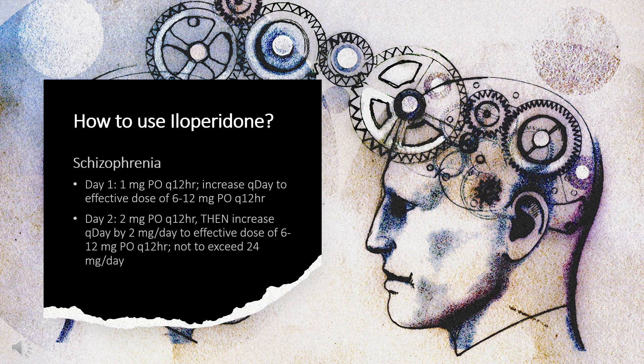Schizophrenia dosing: Day 1, 1 mg PO Q12HR. Day 2, 2 mg PO Q12HR. Then increase by 2 mg per day to an effective dose of 6–12 mg PO Q12HR, not to exceed 24 mg per day. The dose must be gradually increased to avoid orthostatic hypotension.